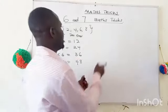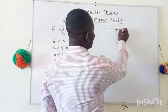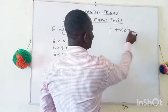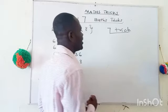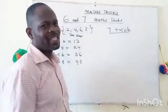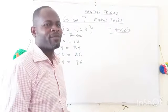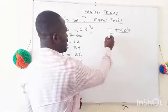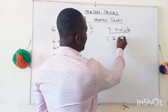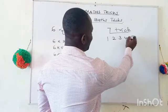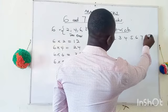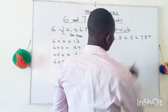Now let's go to the number seven trick and see how we can work with it. Let's count numbers from one to nine: one, two, three, four, five, six, seven, eight, nine.